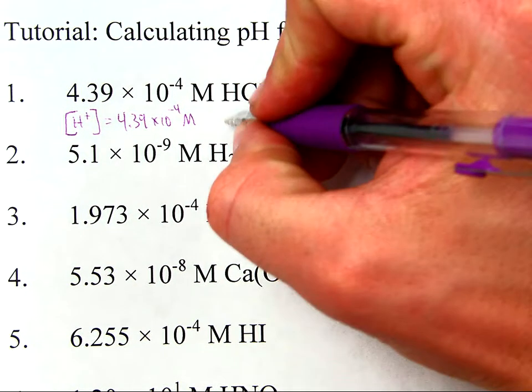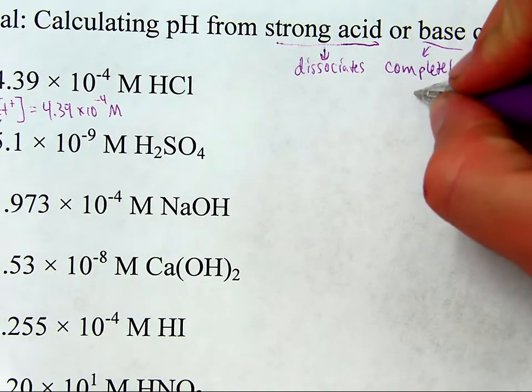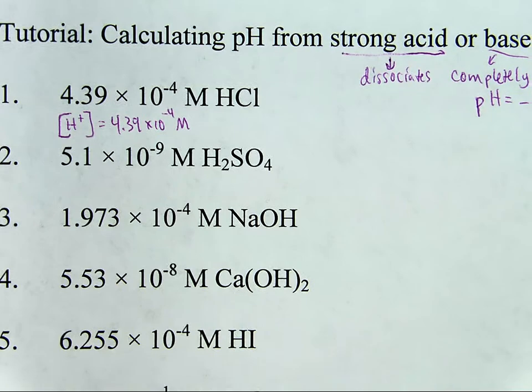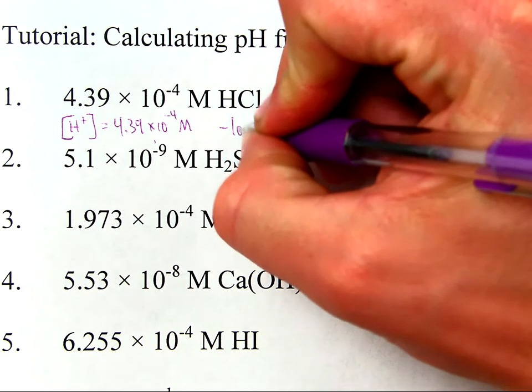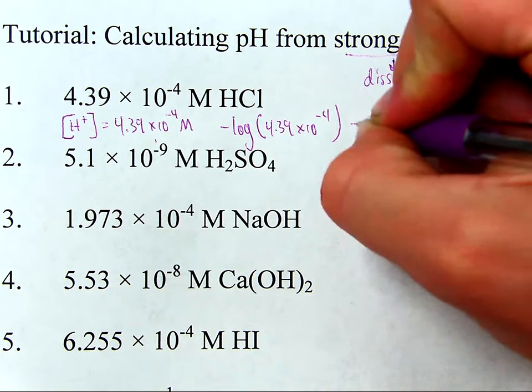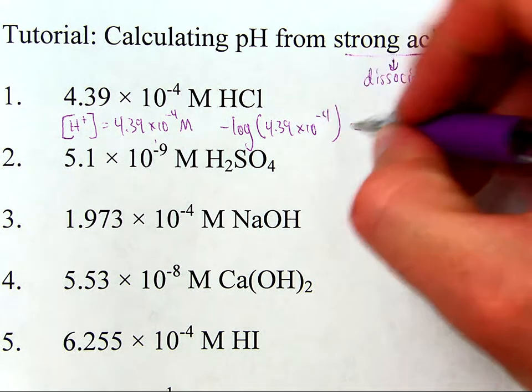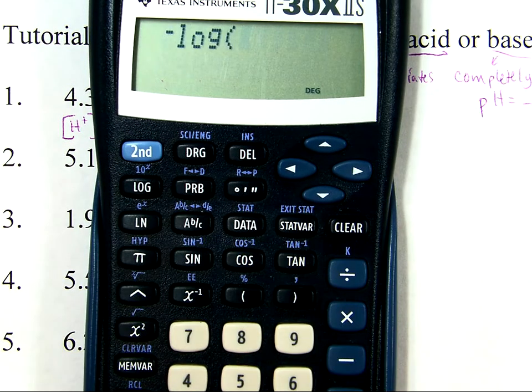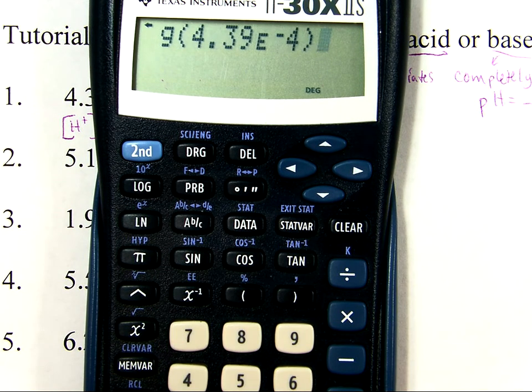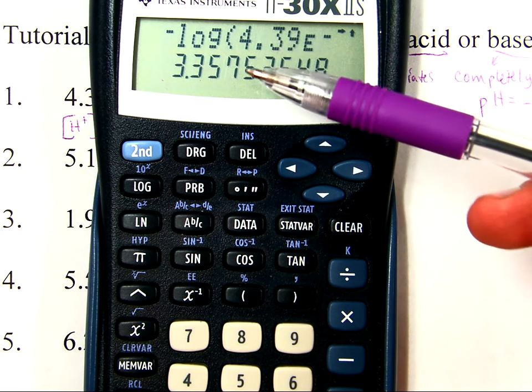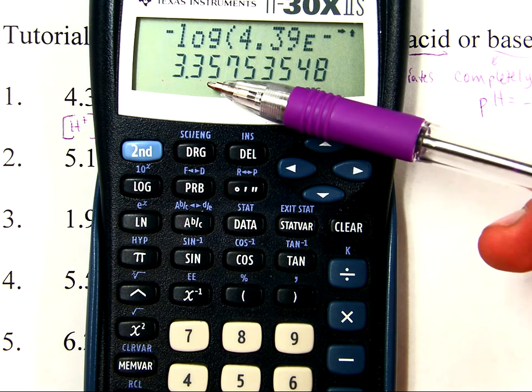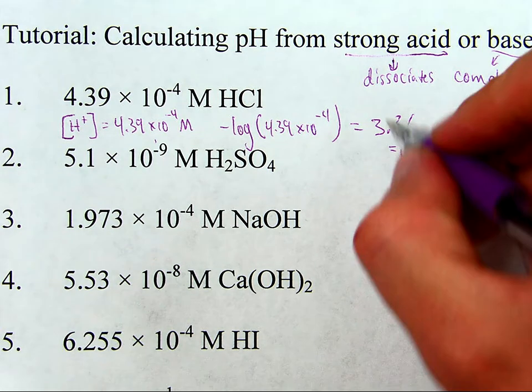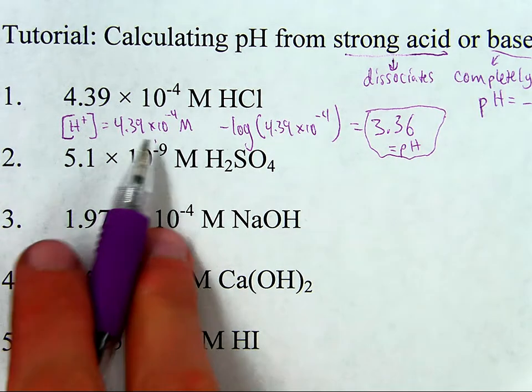So if I want to find the pH, all I need to do is remember that all-important formula for pH, because after all, that's what this is asking. We're going to find pH for all of these. Negative log of hydrogen ion concentration. All right, so here we go. Negative log of 4.39 times 10 to the negative fourth equals, let's see what it comes out to. We started with three sig figs, so three point three six. So 3.36 is the pH of that solution of hydrochloric acid.